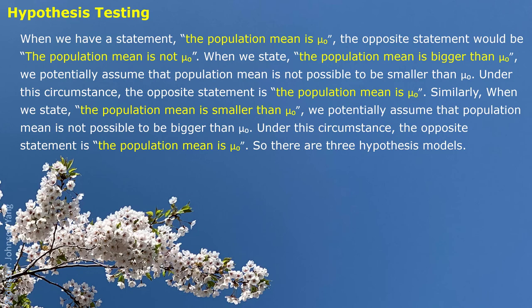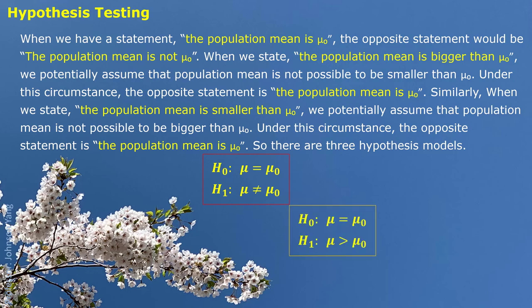Similarly, when we state the population mean is smaller than mu0, we potentially assume the population mean is not possible to be bigger than mu0. Under this circumstance, the opposite statement is the population mean is greater than or equal to mu0. So there are three hypothesis models: null hypothesis mu equals mu0 with alternative mu not equal to mu0; or null hypothesis mu equals mu0 with alternative mu greater than mu0; or null hypothesis mu equals mu0 with alternative mu less than mu0.